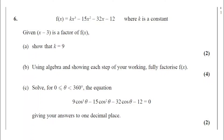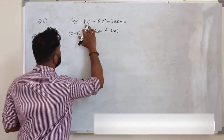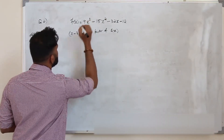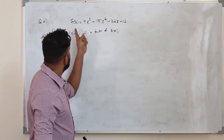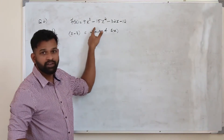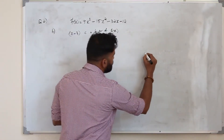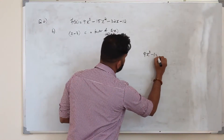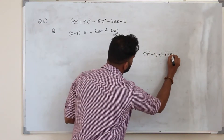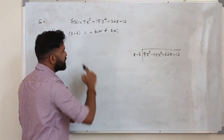Part B: using algebra and showing each step of your working, fully factorize the function f of x. The question carries 4 marks. We replace k by 9 since in Part A we found k equals 9. Now we have the function and we know x minus 3 is a factor, so we use the long division method. Divide 9x cubed minus 15x squared minus 32x minus 12 by x minus 3.